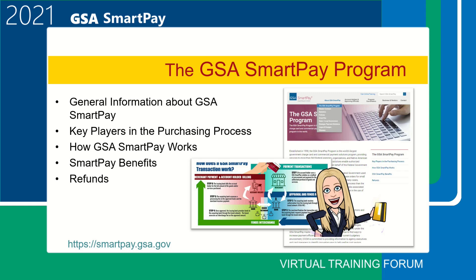The GSA SmartPay program was established in 1998 and is the world's largest government charge card and commercial payment solutions program. It provides services to more than 560 federal agencies, organizations, and Native American tribal governments. Key players within the program include agency or organization program coordinators (AOPCs), approving officials (AOs), account holders (also called card holders), the designated billing office, the transaction dispute officer, the electronic commerce office, the contractor bank, and the merchants.